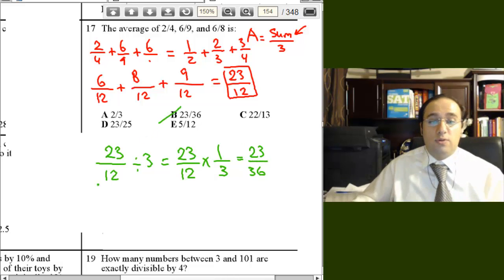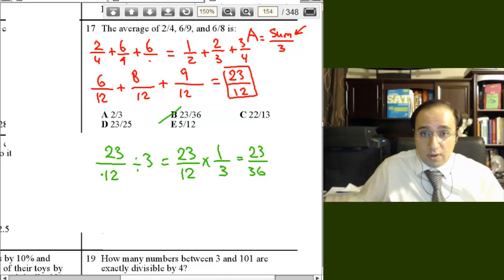This is the answer, 23 over 36, so the answer is B. So the answer is B, okay?